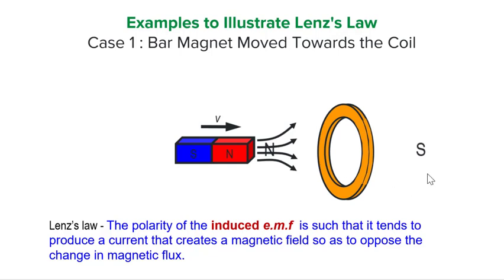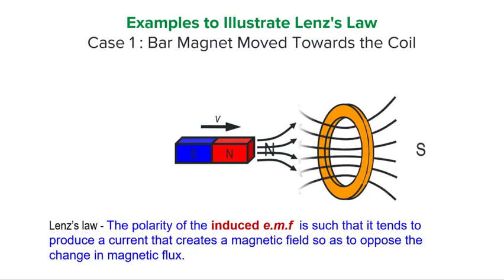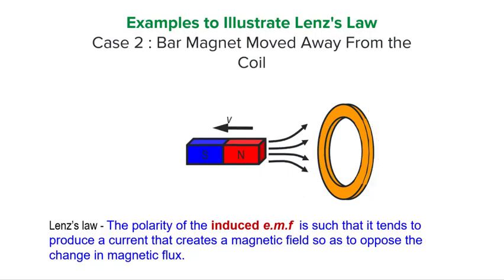We see that the magnetic field induced by this north and south pole in the coil will be in this direction. Hence, using the right-hand grip rule, we are able to get the direction of the induced current. Note that in this case, the induced magnetic field is in the opposite direction to the external field created by the bar magnet, and the net effect is to reduce the increasing flux linkage that the coil is experiencing. Now let us explain the case where the bar magnet is moved away from the coil.